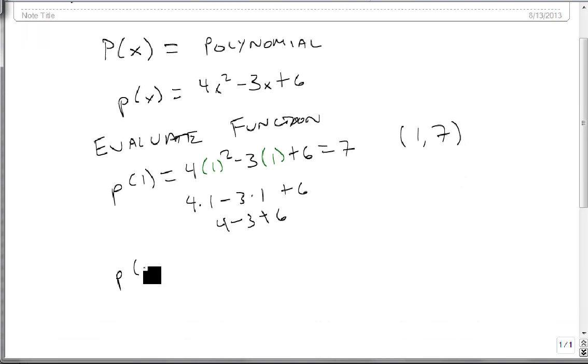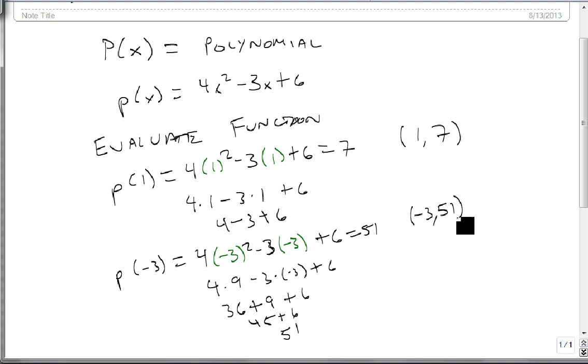Similarly, we can evaluate P(-3). Wherever I see an x, I put a negative 3. That gives us 4 times (-3)² minus 3 times (-3) plus 6, which is 4 times positive 9, then minus 3 times -3 plus 6. 4 times 9 is 36, minus 3 times -3 is positive 9 plus 6. 36 + 9 + 6 = 51, which means we have the input-output pair (-3, 51).